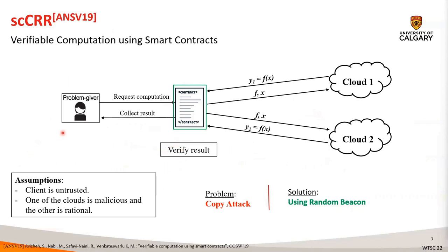At a high level, it works as follows. The problem giver sends a request for the computation to the smart contract. Upon receiving the request, the smart contract instructs the clouds to perform the computation. The clouds then return their result to the smart contract. Then the smart contract compares the results. If the results match, the result is considered as correct. Otherwise, the smart contract initiates the malicious cloud identification protocol, which is the same as CRR.